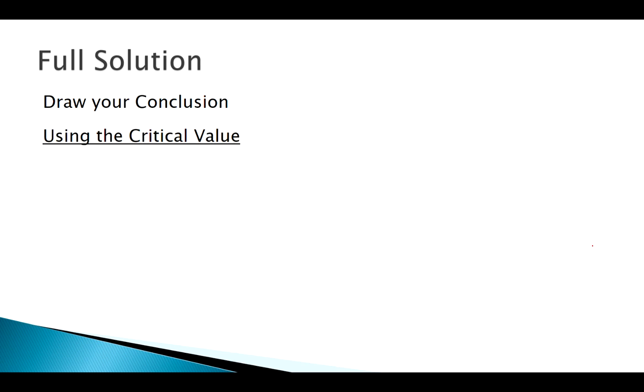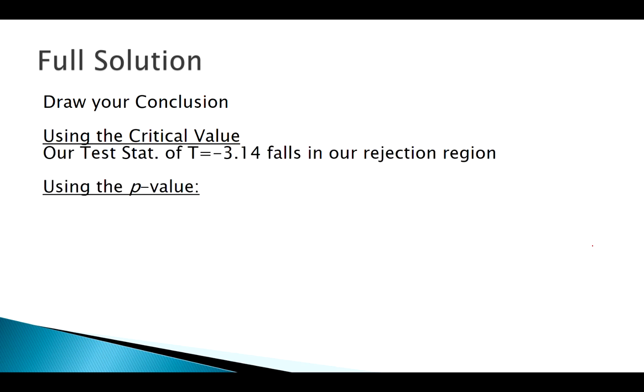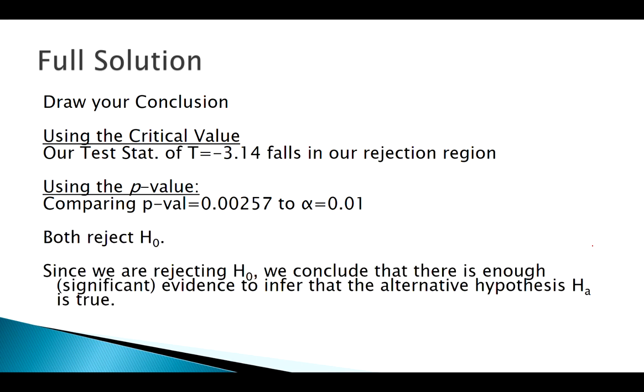We've got our critical value. Our test statistic fell in our rejection region. Our p-value is smaller than alpha. We've rejected, so we're saying we do here have statistically significant evidence to reject the null. Alright, so thanks for tuning in, and we'll see you next time.